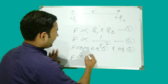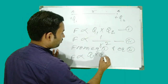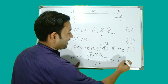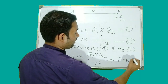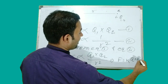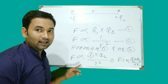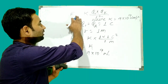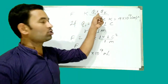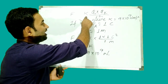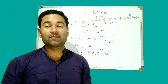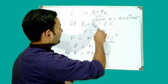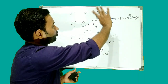When we combine both relationships, the force is directly proportional to Q1 into Q2 divided by R². So the force F is equal to k multiplied by Q1 into Q2 divided by R², where k is the proportionality constant.